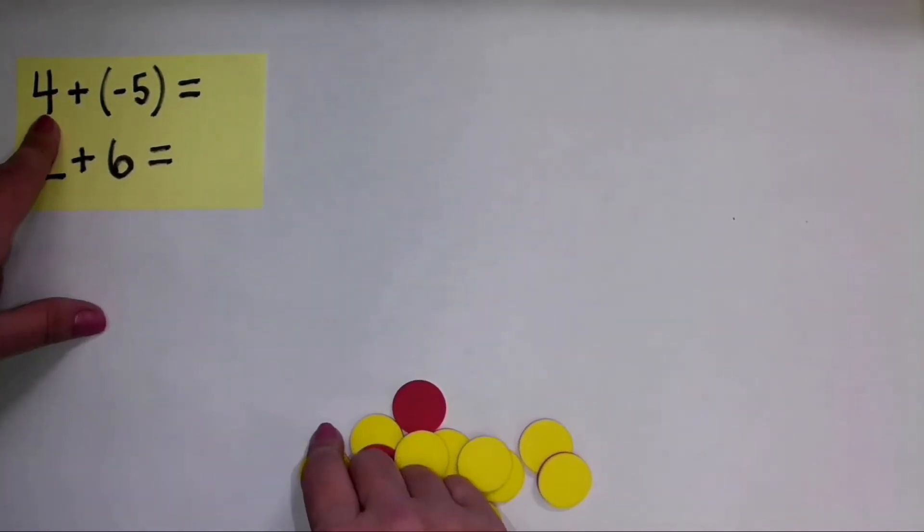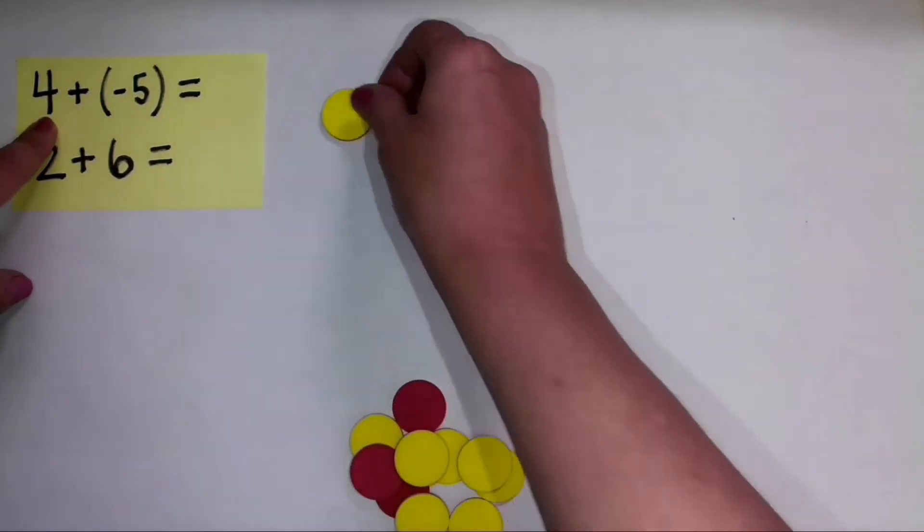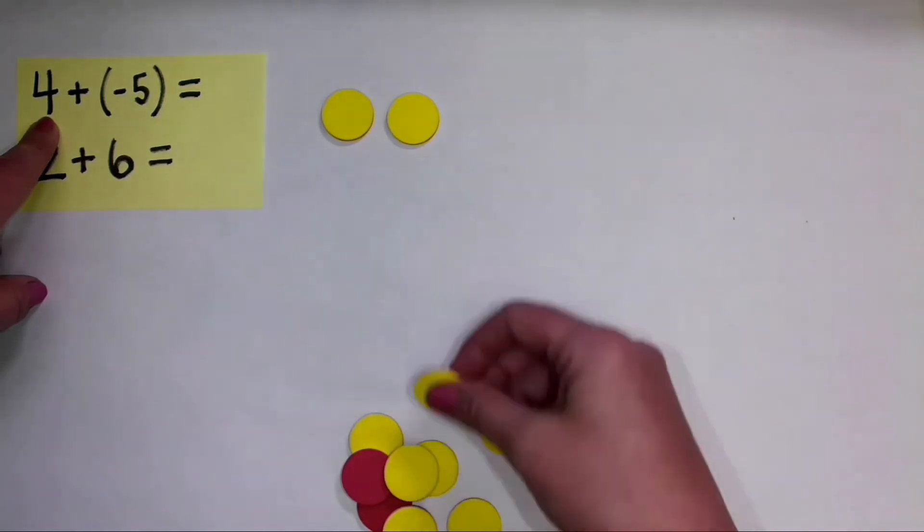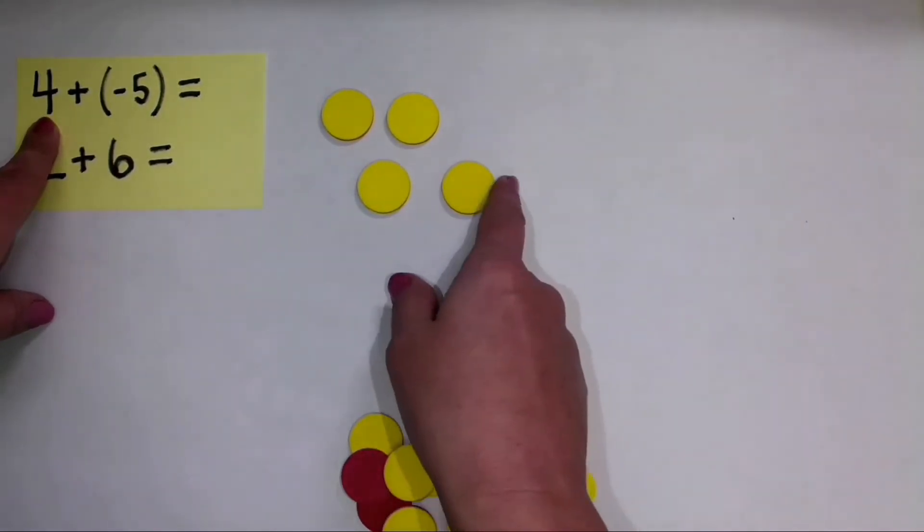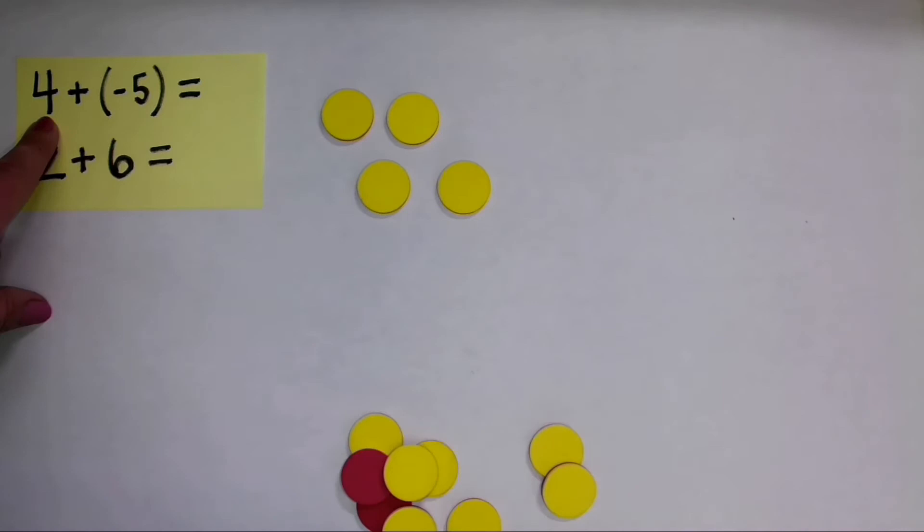So I'm starting with 4, and this 4 is positive because there's no negative symbol directly preceding it. So I'm going to put out four yellow counters, and I can arrange them any way. I'm just going to arrange them just like that.